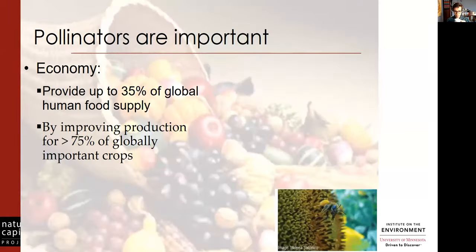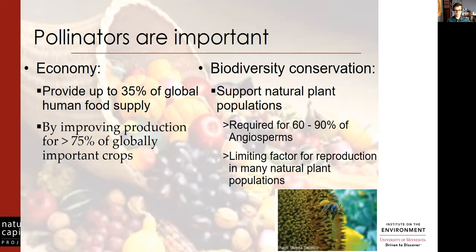Pollinators are really important. They provide up to 35% of the global food supply by improving 75% of globally important crops. For biodiversity, they're also really important — they support pollination of many plants. 60 to 90% of all angiosperms require some form of external pollination, mostly bees, and it's been shown to be a limiting factor of reproduction for many natural plant populations.